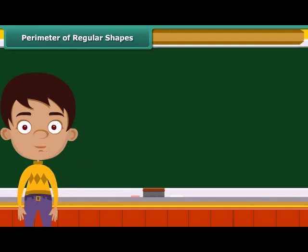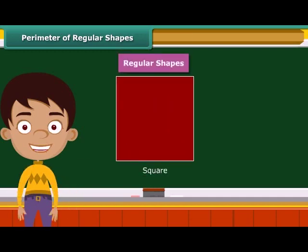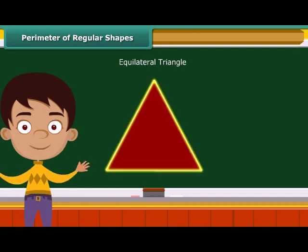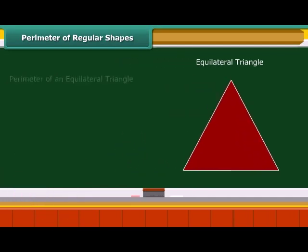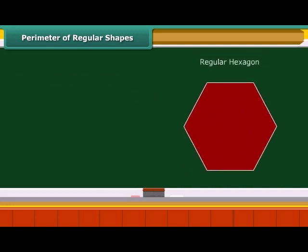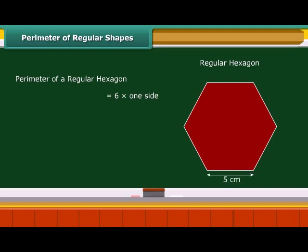Shapes that have all sides of equal length and all angles of equal measure are known as regular shapes. A square is a perfect example of a regular shape. Another regular shape is the equilateral triangle, whose three sides are equal. The perimeter of an equilateral triangle is 3 multiplied by its side — for example, a triangle of side 3 cm has a perimeter of 9 cm. The perimeter of a regular hexagon is 6 multiplied by its side — for example, a hexagon of side 5 cm has a perimeter of 30 cm.